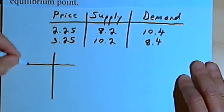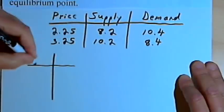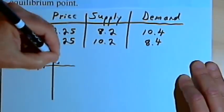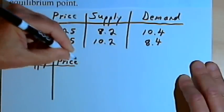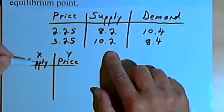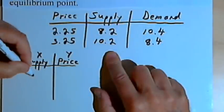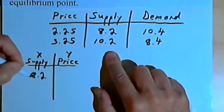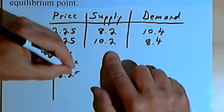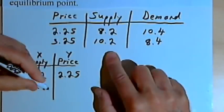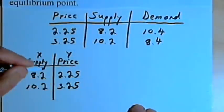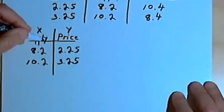When we do a price supply equation, the input is the supply — that's our x column — and the price is the output, which would be the y column. So let's make a little table of values for just the supply and the price. When the supply is 8.2, that equates to a price of 2.25, and when the supply is 10.2, that equates to a price of 3.25.